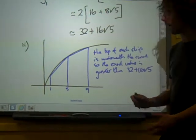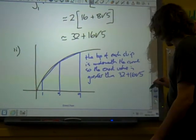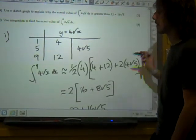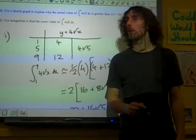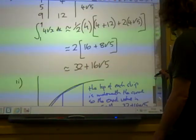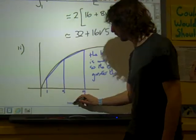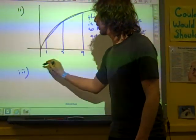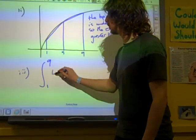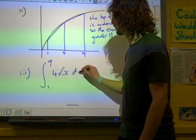And then, I'm quite tired of that. Then part three, use integration to find the exact value of that. So we're doing now the integral from one to nine, four root x dx.